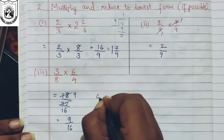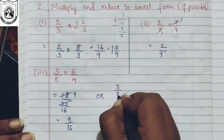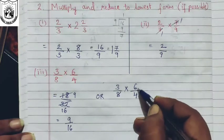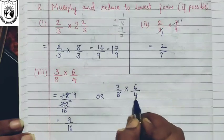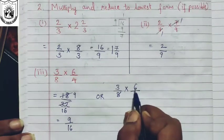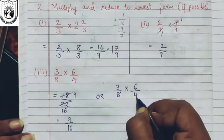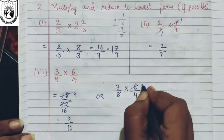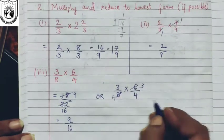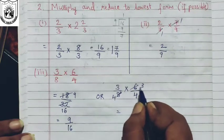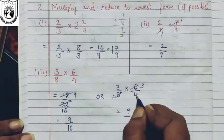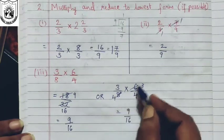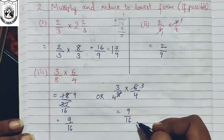The other way: if you directly cancel in the beginning step, write three-eighth multiplied by six-fourth. Remember — you can only cancel a numerator with a denominator, or crosswise, but not denominator with denominator or numerator with numerator. So six and eight can be cancelled in the two table: two threes are six, two fours are eight. Now three and four cannot be cancelled, so three times three are nine and four times four are sixteen, giving nine upon sixteen. Use whichever method you find easier.